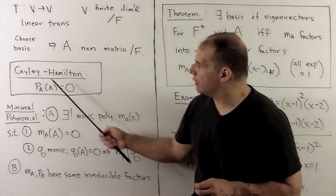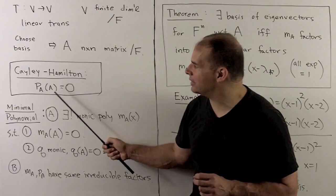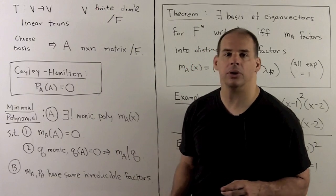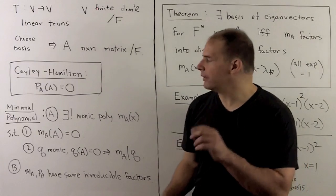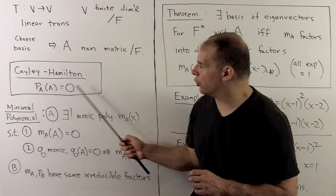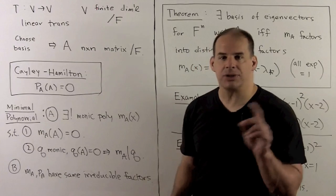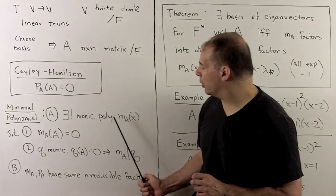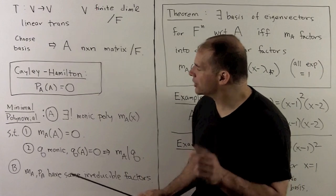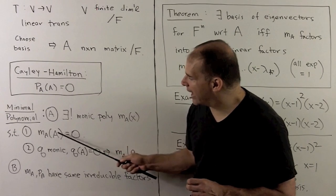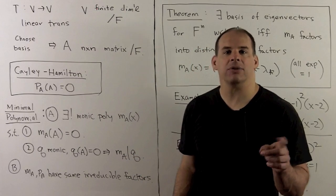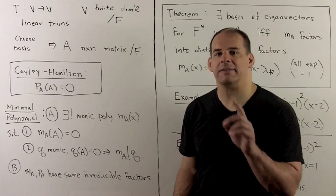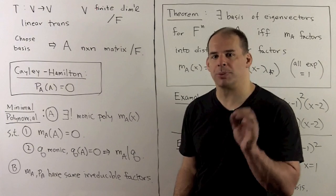The first big result is the Cayley-Hamilton theorem, which states that if we put A into the characteristic polynomial for A, we get the zero matrix out. From there, we ask if there's a polynomial of smallest degree such that this happens — and that's the minimal polynomial. There exists a unique monic polynomial M sub A of X such that M sub A of A gives the zero matrix. If Q is any monic polynomial such that Q of A is zero, then M sub A divides Q.